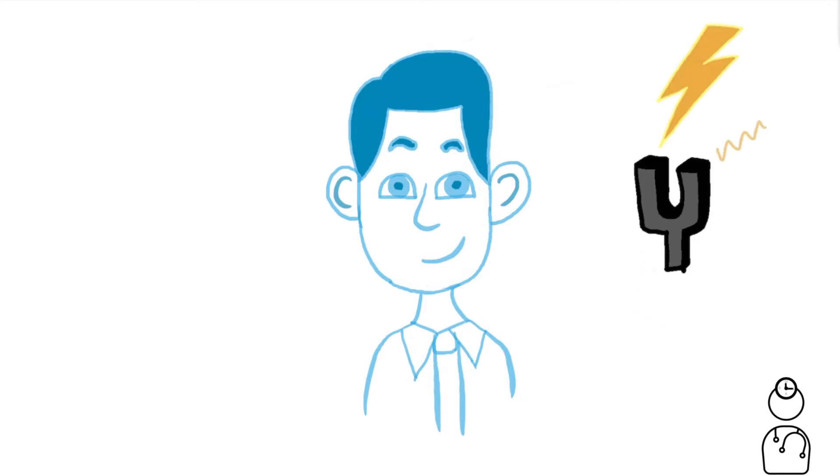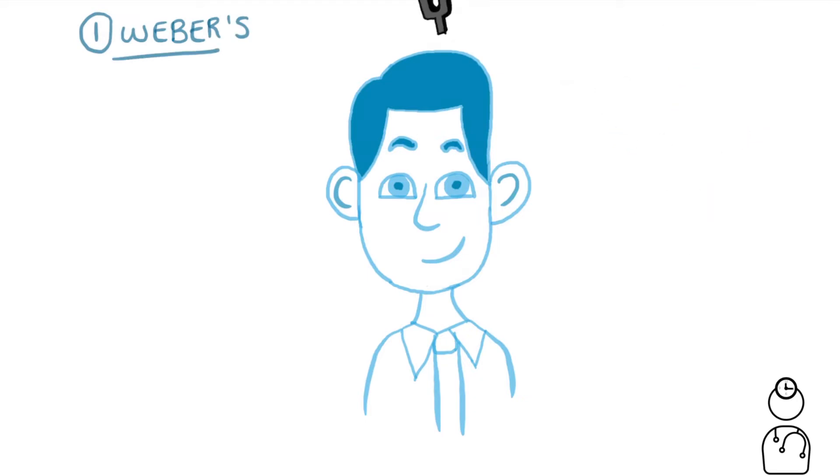We strike the tuning fork so it starts vibrating and then we're going to place it in the middle of Bob's forehead. We're going to ask him which side the sound is loudest.